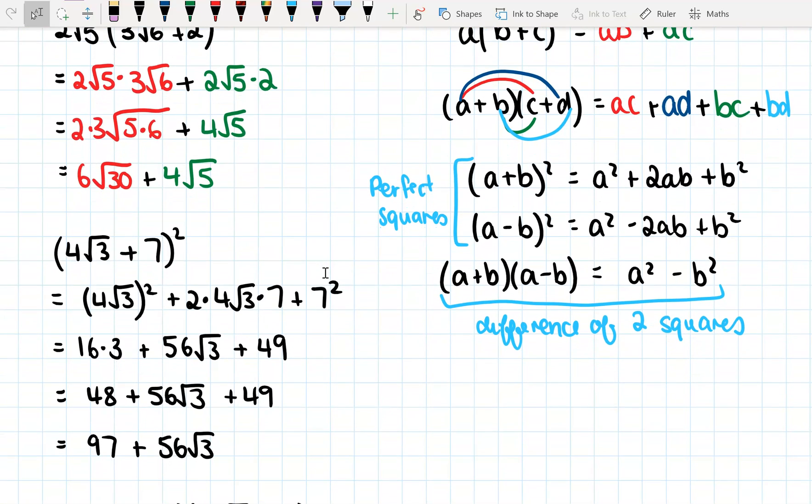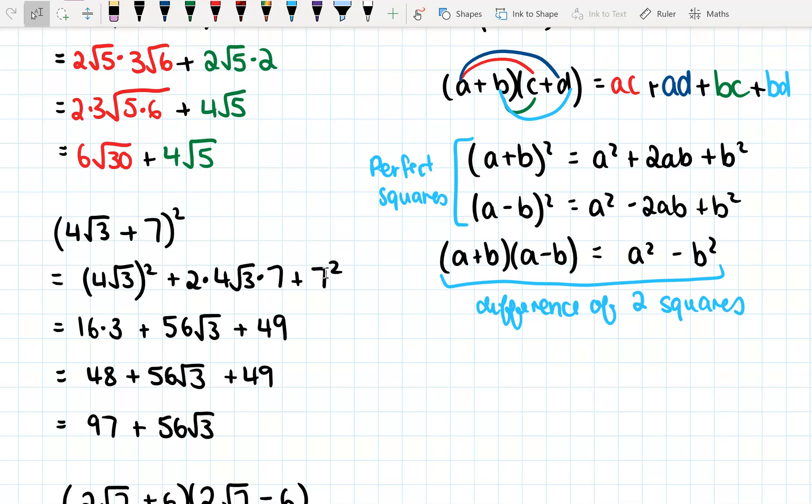It's far quicker if you know the shortcuts than writing the brackets out. Of course, you're allowed to write them out if you want to do (a + b)² as (a + b)(a + b). If you would like to do it that way, that's absolutely fine. But it does take a lot more work and a lot more time. And sometimes that's the kind of thing that can really slow you down when you're trying to do your tests. Okay, good luck.